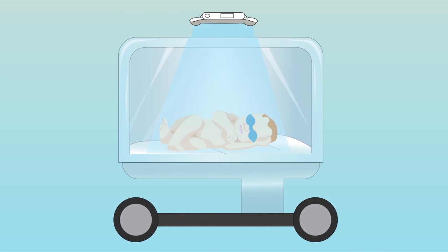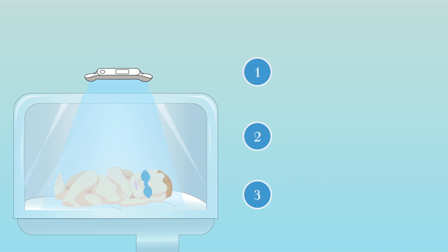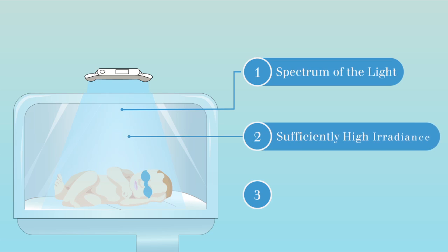But it's not enough to place blue light above jaundiced preemies. Consider these three important factors for effective phototherapy: spectrum of light, sufficiently high irradiance, and effective surface area. To better understand, let's doodle them out.